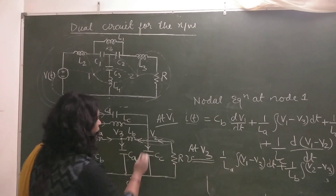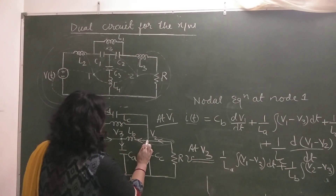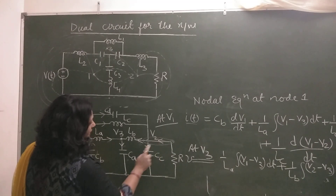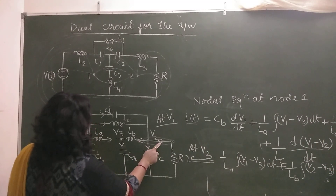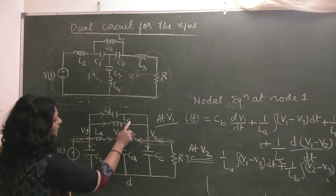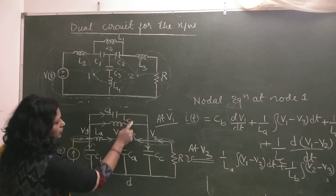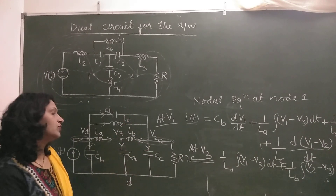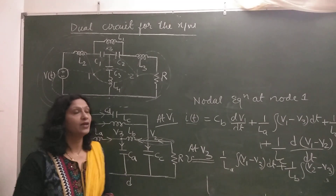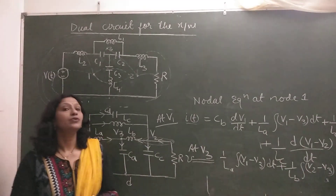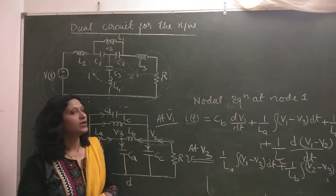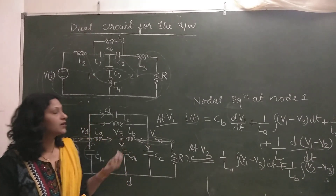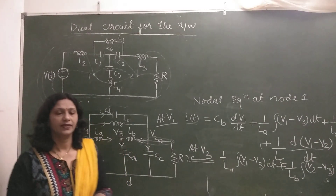Similarly, for node V2 there are three incoming and two outgoing currents. You can write the equations in the same way — for capacitors take dV/dt, and for inductances take (1/L)·∫V dt. This is the way to draw the dual circuit and write the nodal equations for the dual circuit. Thank you.